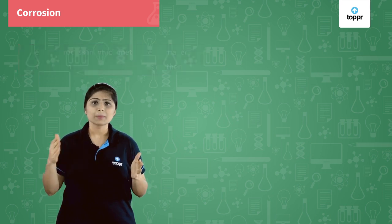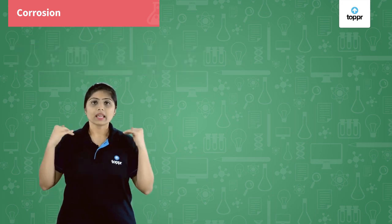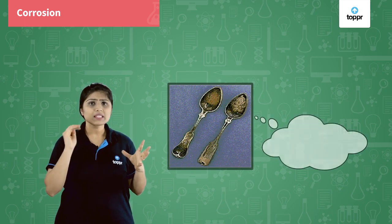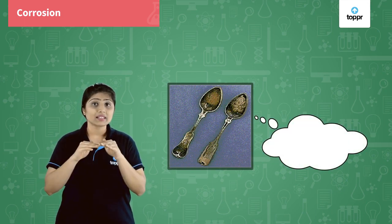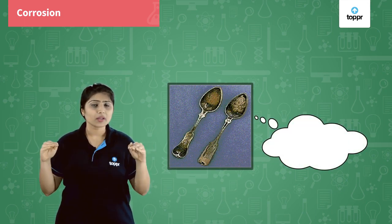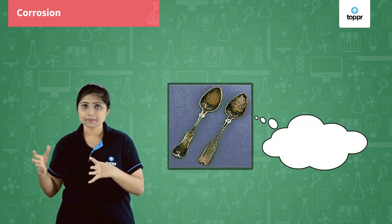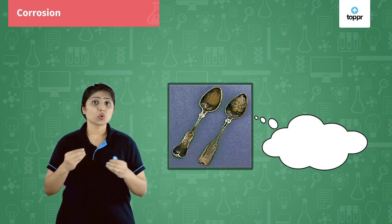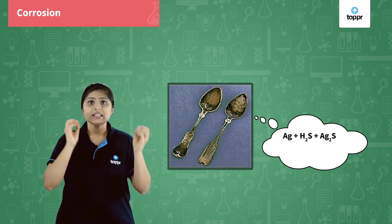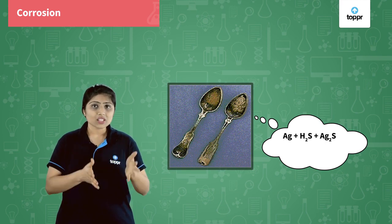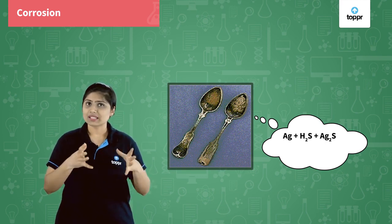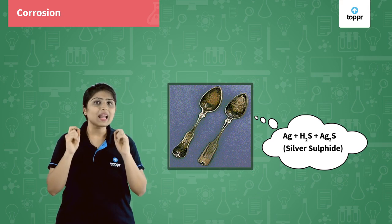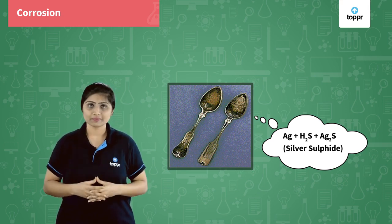Corrosion happens slowly. If you would have observed a silver metal, you must have seen that there is a black colored layer formed on it after some time. That is because silver gets corroded because of sulfur — silver reacts with the hydrogen sulfide gas present in air and forms silver sulfide, the black colored layer formed on it.